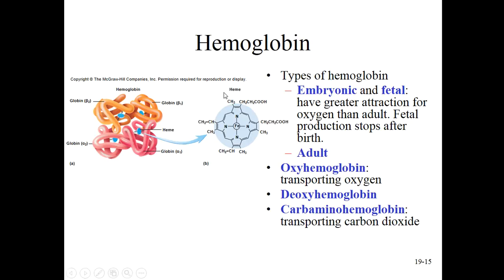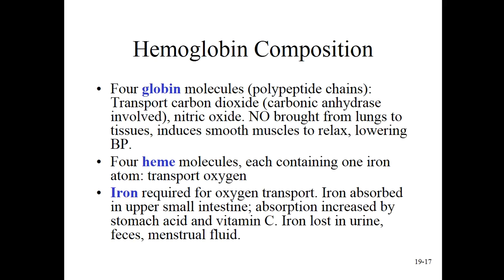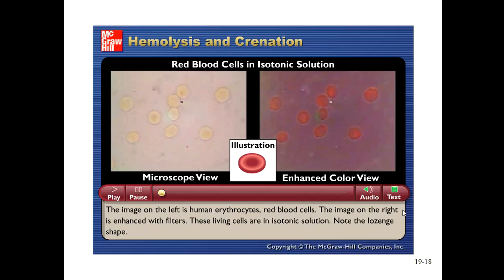Here are the other forms of hemoglobin. We talked about oxyhemoglobin. When it's deoxygenated — like in the venous blood headed back to the lungs to get recharged — it's deoxyhemoglobin. When it's transporting carbon dioxide, it's carbaminohemoglobin. Hemoglobin is made of four globin molecules and four heme molecules — this is where the iron comes in. And of course, when you combine iron and oxygen, you get rust, just like an old car and your blood.